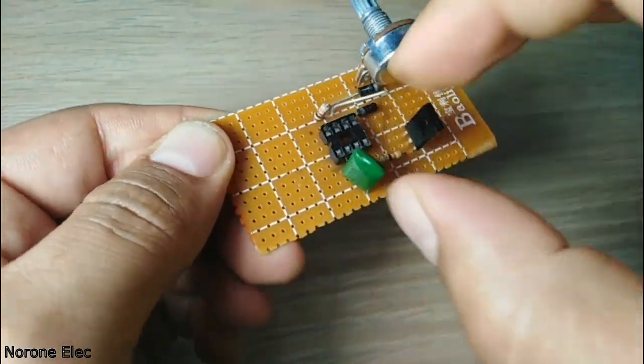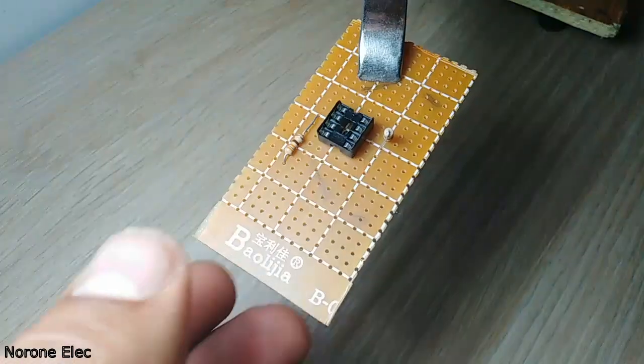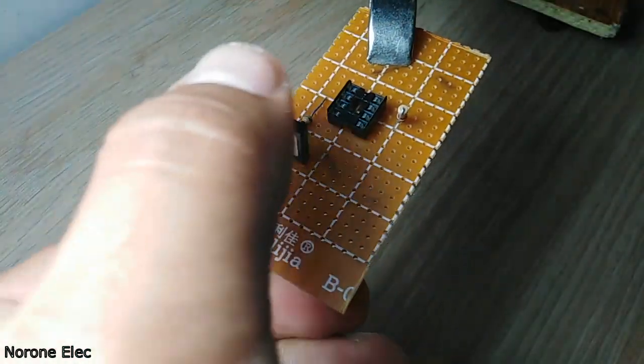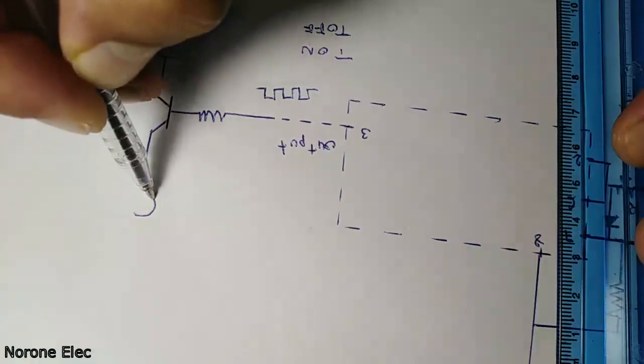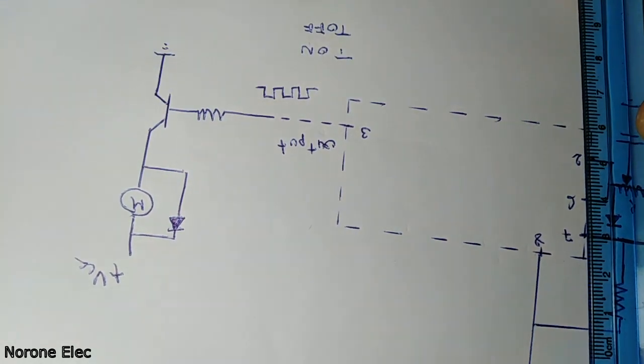Connect the transistor to pin 3 if you want to control big loads. In this project I use a BD139 NPN transistor. You need to use a flyback diode which is connected in parallel with the motor to protect the transistor.